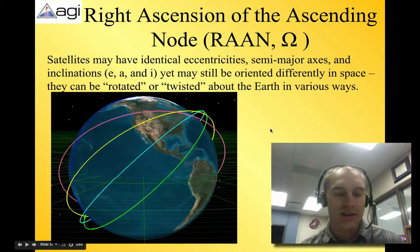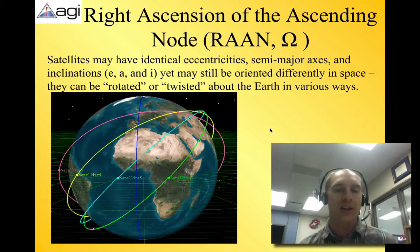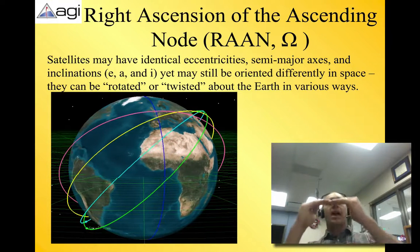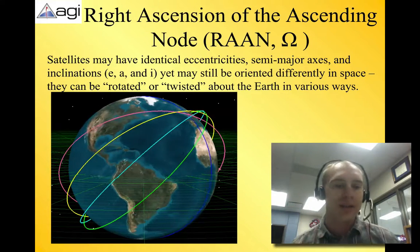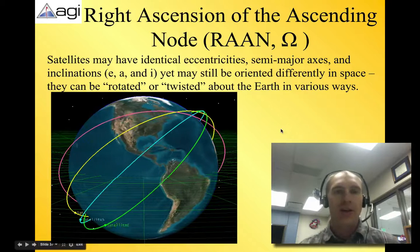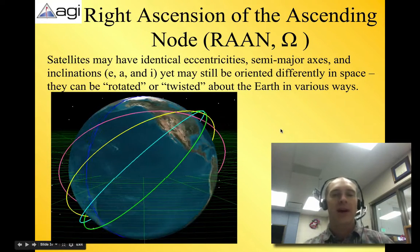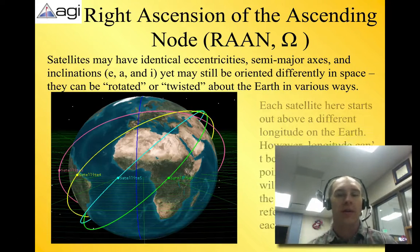They do intersect. You can see that where those rings come together, there are points of intersection, but they only intersect at one particular moment, and if they have a slightly different altitude, then they're really not at risk of running into each other, as long as that's maintained. So that is right ascension of the ascending node, where they have the same E, A, and I, but they're just kind of rotated or twisted around the Earth.